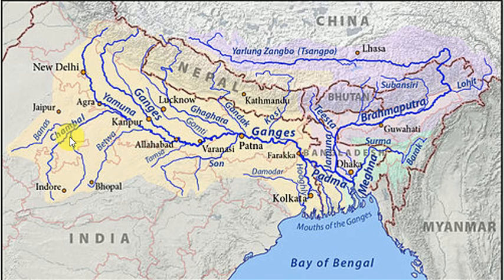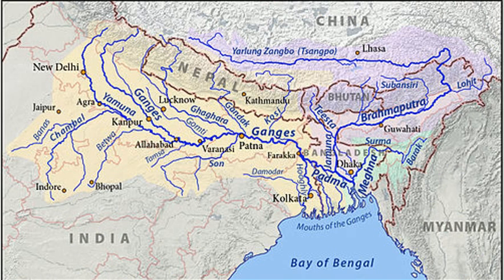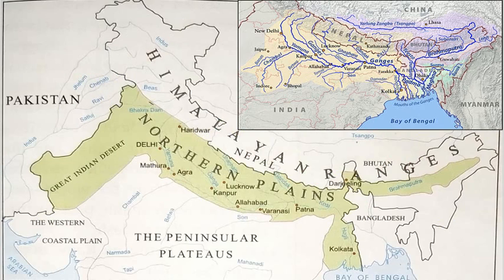Rivers coming from the south, such as Chambal, Betwa, Kane, and Son, have also contributed to the formation of this plain. The general slope of this area is towards the east.